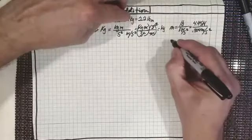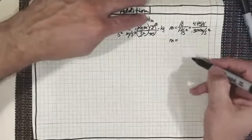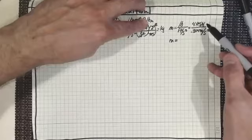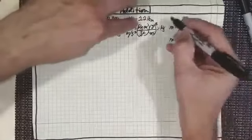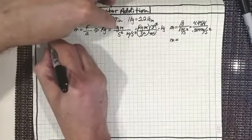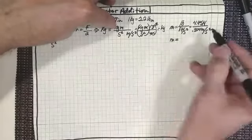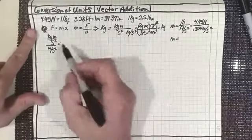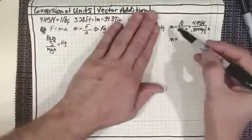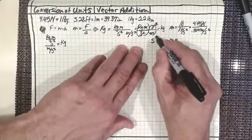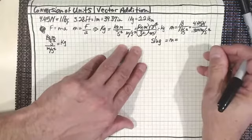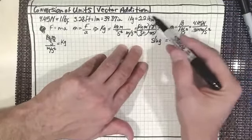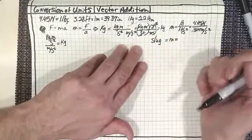When we look at mass in the British gravitational system, we have newtons per meter per second squared. A newton is a kilogram meter per second squared divided by meters per second squared, so it just comes out to kilograms. The mass unit in the British gravitational system is the slug — not pounds mass. The pound is really a unit of force; the pounds mass convention only works at the surface of the Earth.